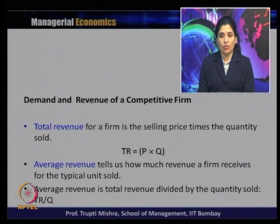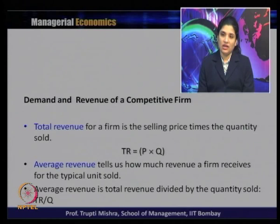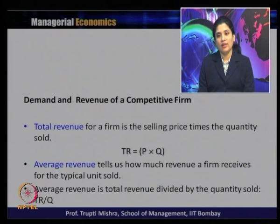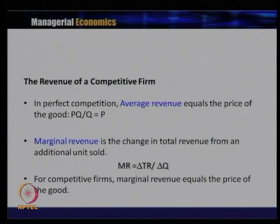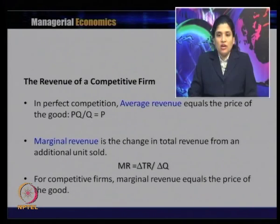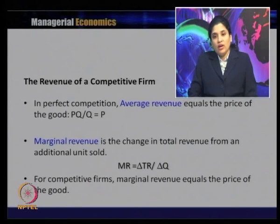Average revenue tells us how much revenue a firm receives for the typical unit sold — it is revenue per unit of output: AR = TR / Q. In perfect competition, average revenue equals the price of the goods, since AR = PQ / Q = P. Marginal revenue is the change in total revenue from an additional unit sold, and for a competitive firm, marginal revenue also equals the price.